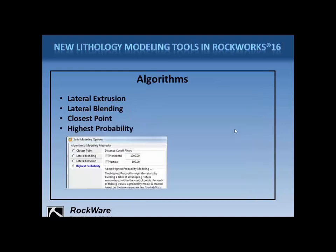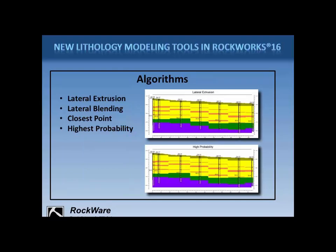The highest probability method was just added to Rockworks 16. This method starts by building a table of all unique G values in the control points. For each of these G values, or lithotypes, a probability model is generated based on the inverse square law, in which probability is inversely proportional to the square of the distance. The program then assigns the final node values based on the G value with the highest probability. In this specific example, the interpolation looks almost identical to the lateral extrusion method. Distance filters are offered which can make the probability model look slightly different. These examples have illustrated the four modeling algorithms with no other bells and whistles, and in this project, which dips from west to east, the intervals are broken and not very smooth.